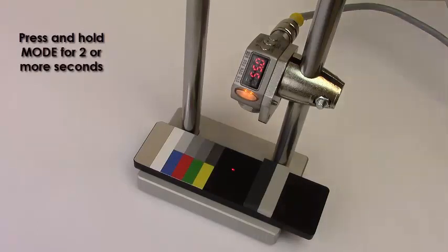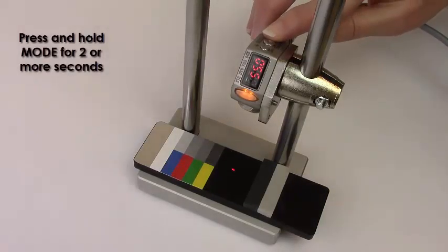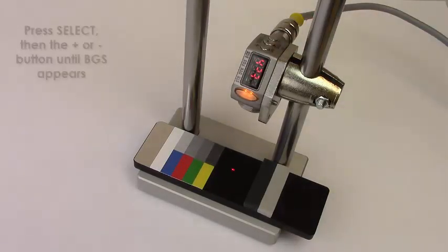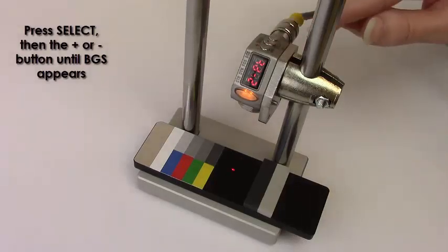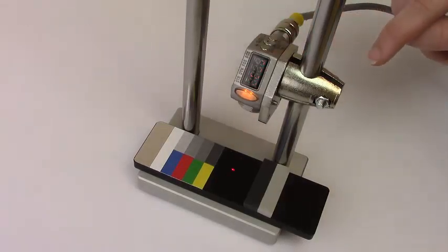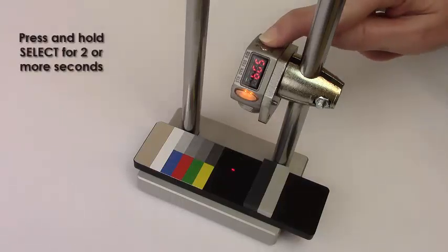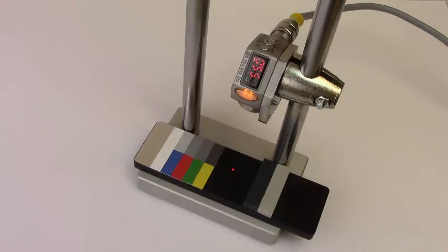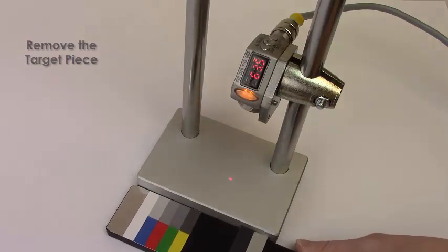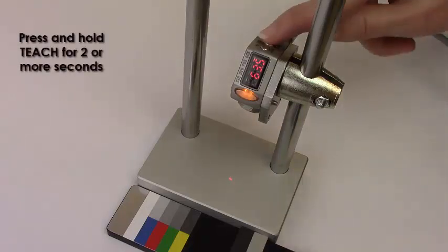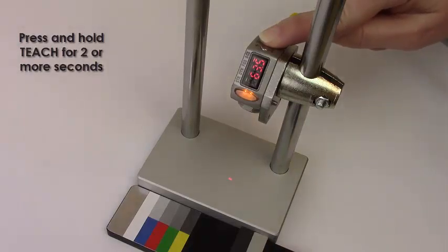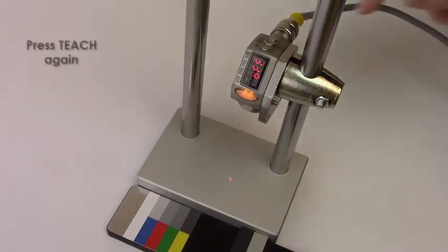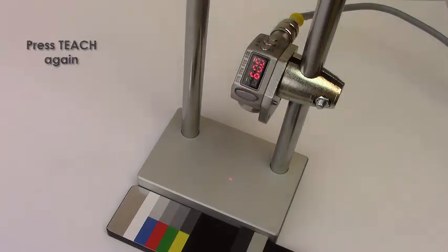Press and hold mode for two or more seconds. Press select, then press the plus or minus button until BGS appears. Press and hold select for two or more seconds. The display flashes and returns to run mode. Remove the target piece. Press and hold teach for two or more seconds, then press teach again. The aluminum base is now the zero point.